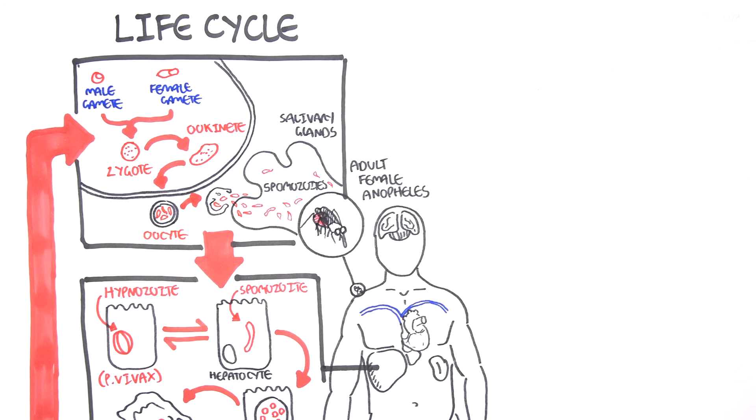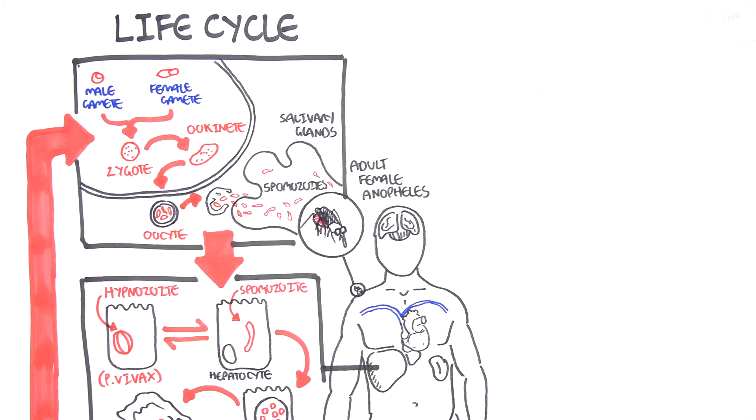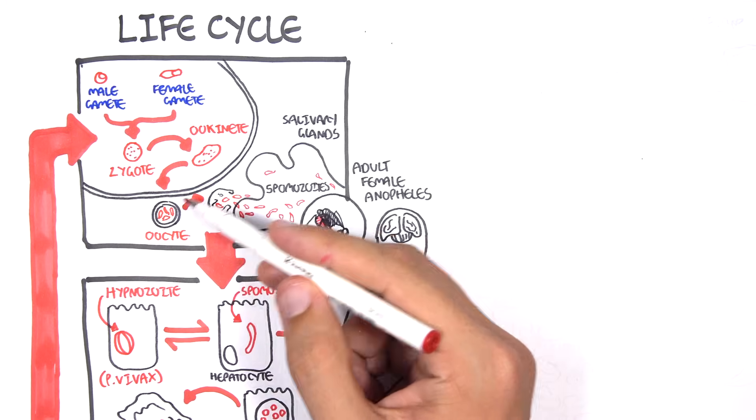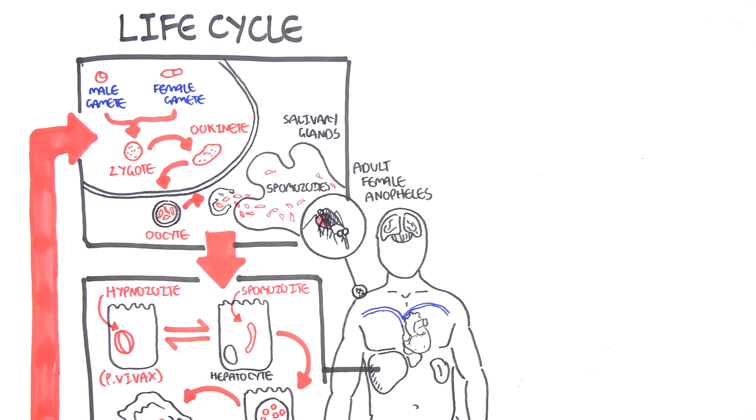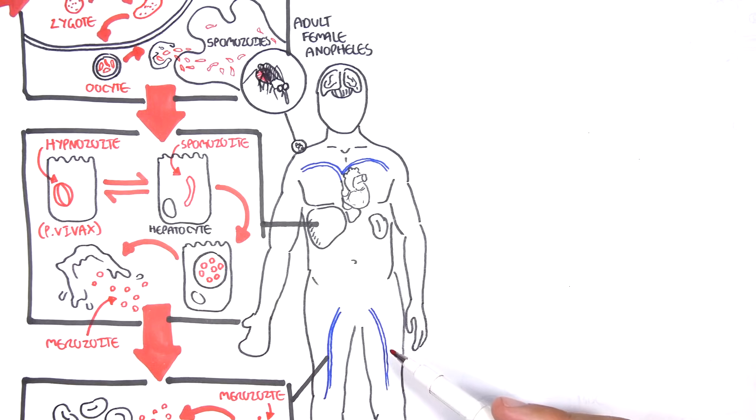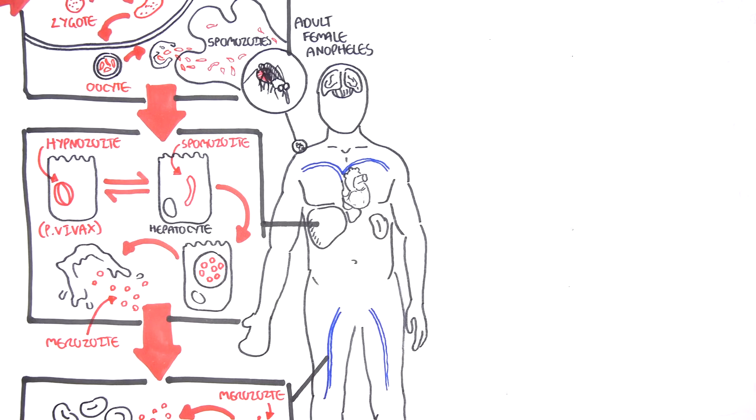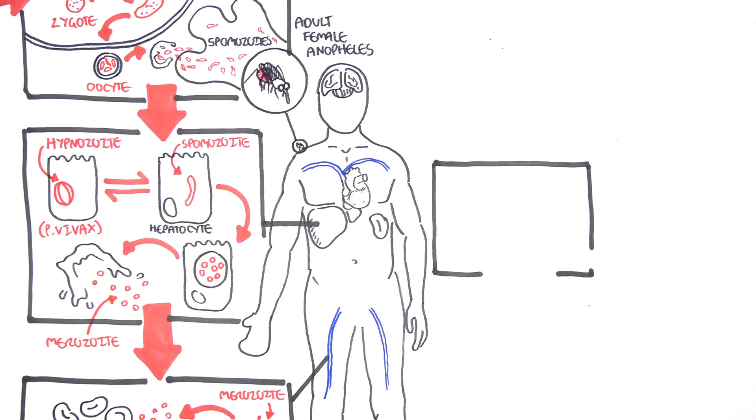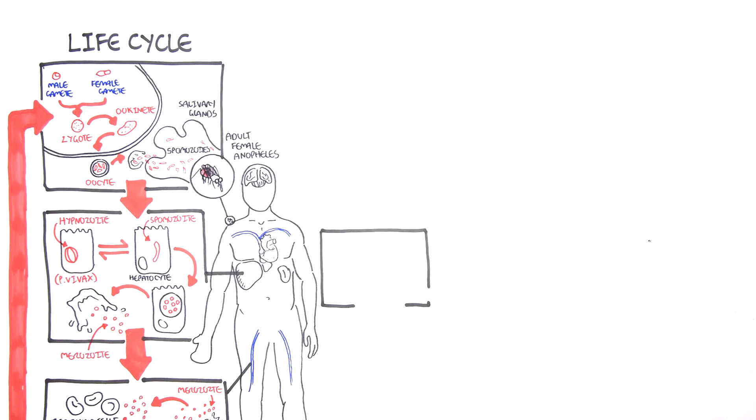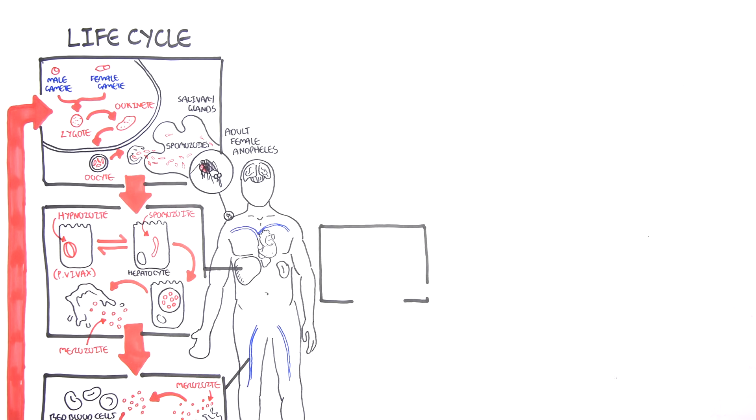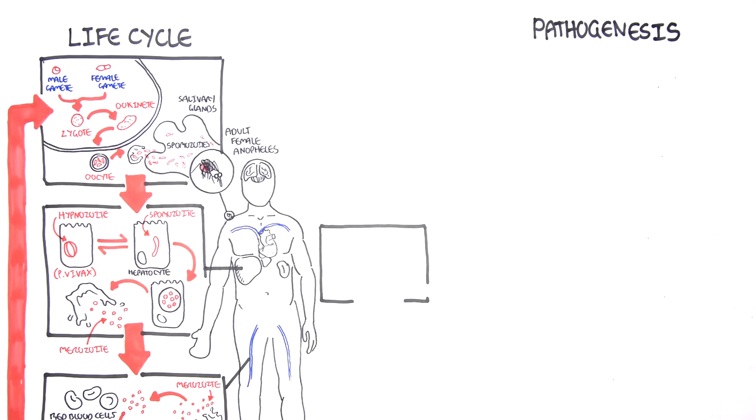Inoculation of the sporozoite into a new human host perpetuates the malaria life cycle. So you can see how this cycle can become very vicious, repetitive, and can easily spread. Now that we know a little about the life cycle, let us concentrate on the pathogenesis, so what we see in the human in terms of clinical signs.